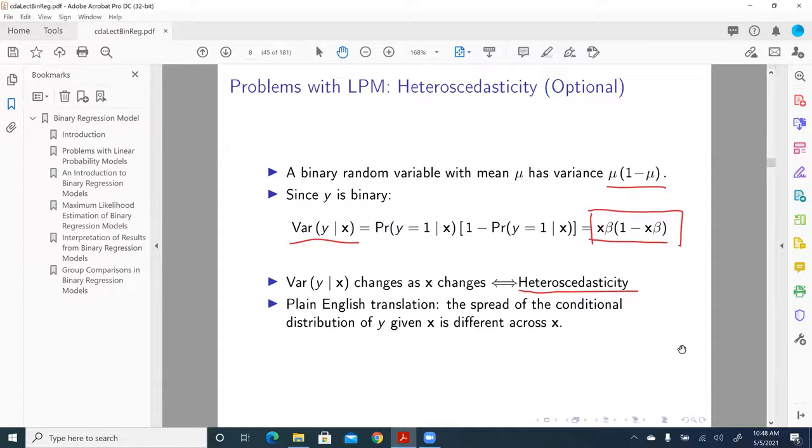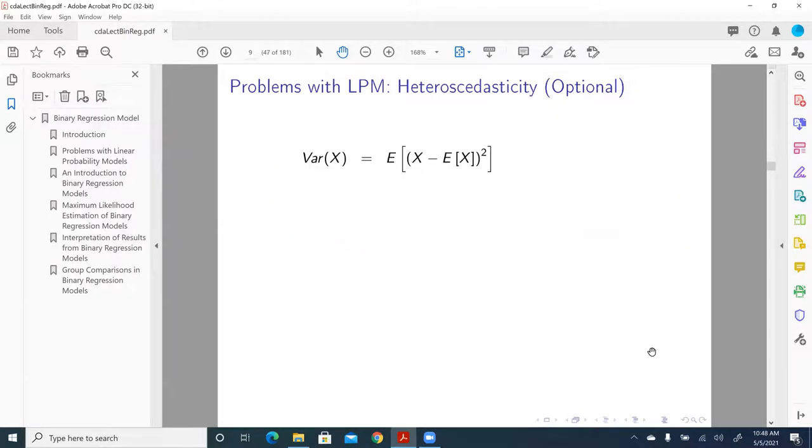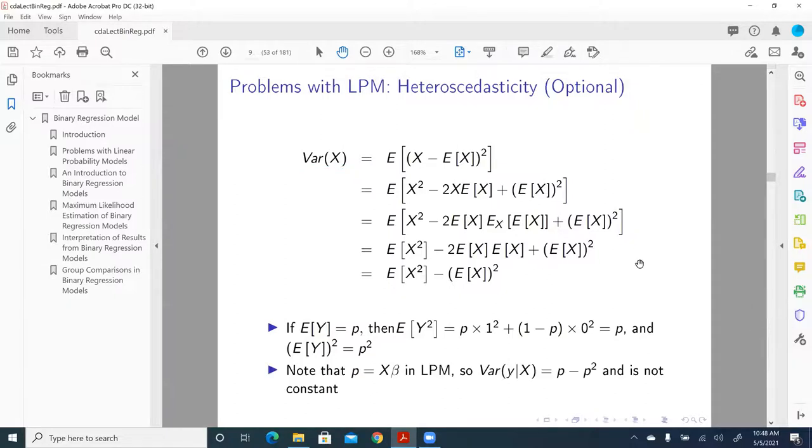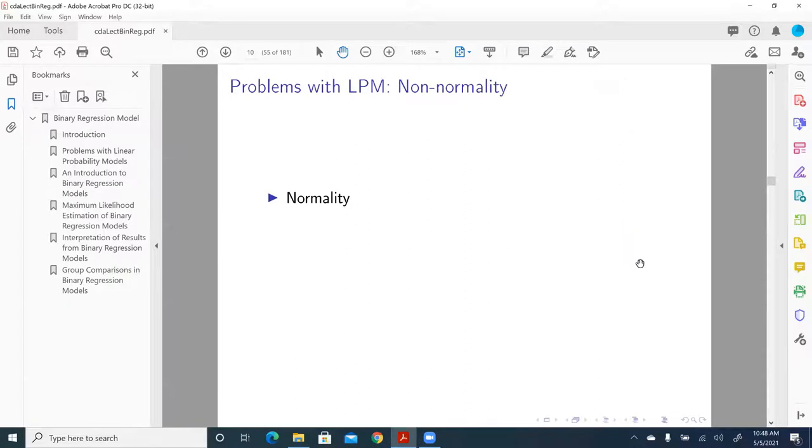That's a violation of basic assumptions of OLS regression. If we use plain English translation, it means the spread of conditional distribution of Y given X is different across X. Here is additional derivation about why that is the case. You can go through notes to get into technical details.